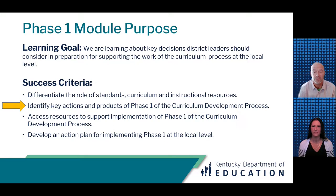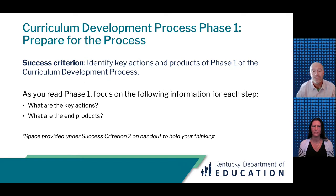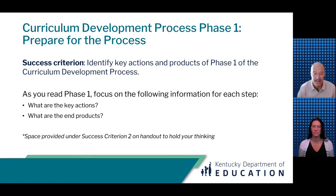Now that we have a shared understanding of the role of standards, curriculum, and instructional resources, we're going to move into a more in-depth look at Phase 1 of the CDP. Phase 1 is about preparing for the process — thinking through key logistics to help streamline the work and make it more manageable. There are four steps: establishing a local curriculum review cycle, developing a timeline for the scope of the work, determining the budget, and creating a curriculum development team that will work together throughout Phases 2 and 3. We want to pause and give you a chance to read through Phase 1, focusing on the key actions and products of each step. Pause the video and restart after reading Phase 1 and capturing your thinking on the handout.